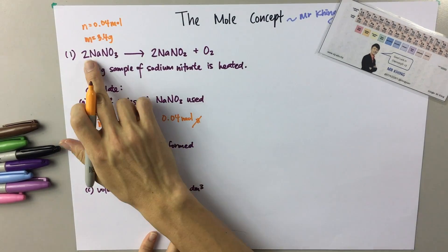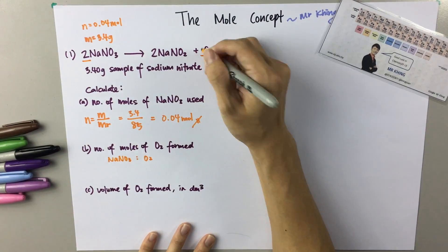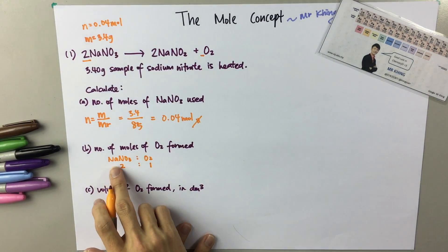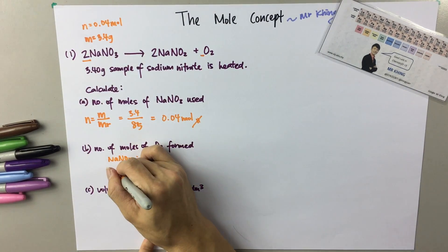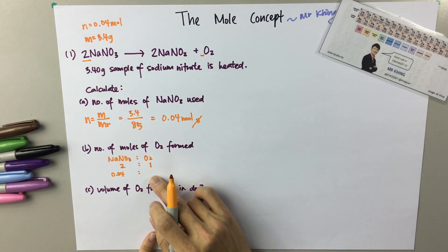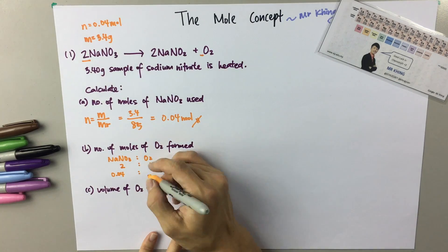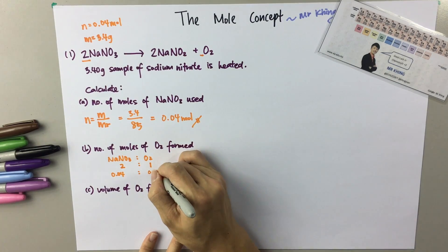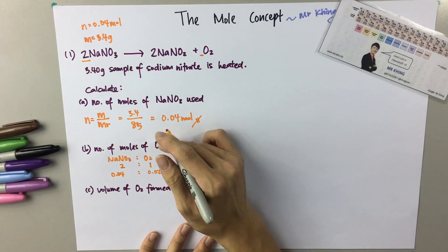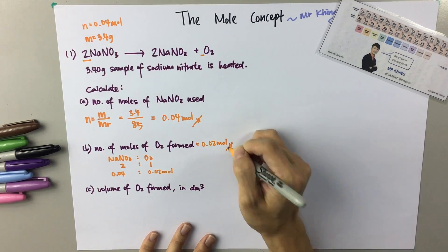NaNO₃ to O₂ — based on the equation, the ratio is 2 to 1. So we know that the number of moles of NaNO₃ is 0.04. If the ratio is 2 to 1, we divide by 2, so it will be 0.02 moles. The number of moles of oxygen formed is 0.02 moles.